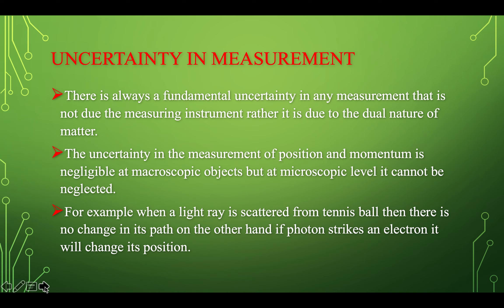Uncertainty in measurement of position and momentum is negligible at the macroscopic level, but at microscopic level it cannot be neglected. At macroscopic level, the wavelength of the wave associated with matter is very small and can be neglected. But at microscopic level, the wavelength is comparable to that of X-rays, as discussed in de Broglie's hypothesis.